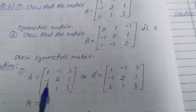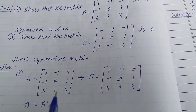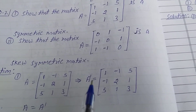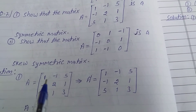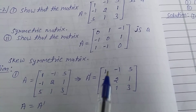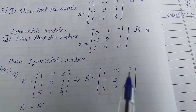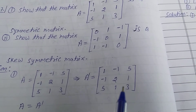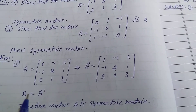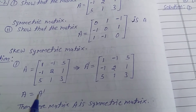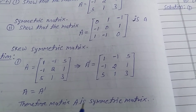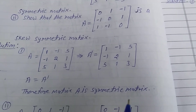The transpose of A is found by converting rows to columns, giving transpose of A equal to [1, -1, 5; -1, 2, 1; 5, 1, 3]. Therefore A equals transpose of A, so matrix A is a symmetric matrix.